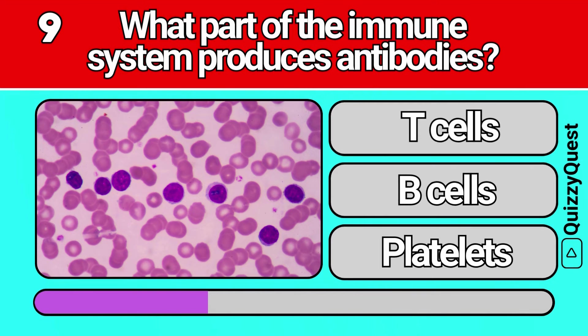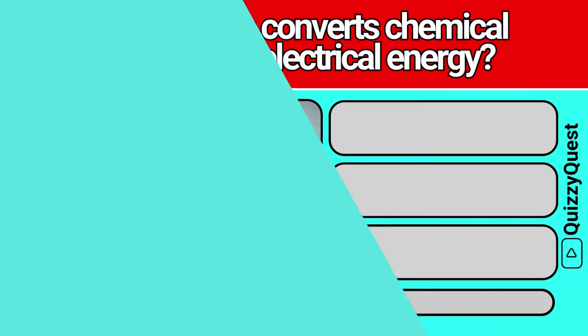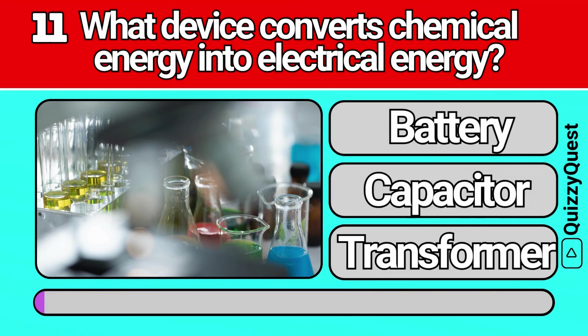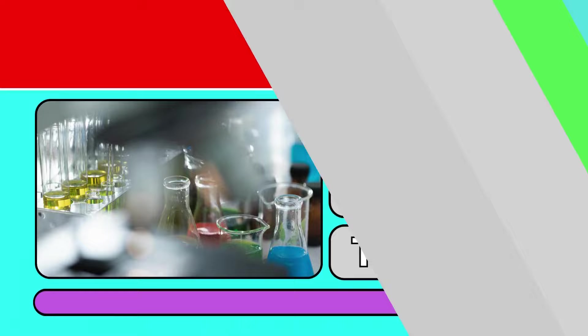What part of the immune system produces antibodies? What term describes the ethics of reporting news truthfully? What device converts chemical energy into electrical energy? What does cultural anthropology study?